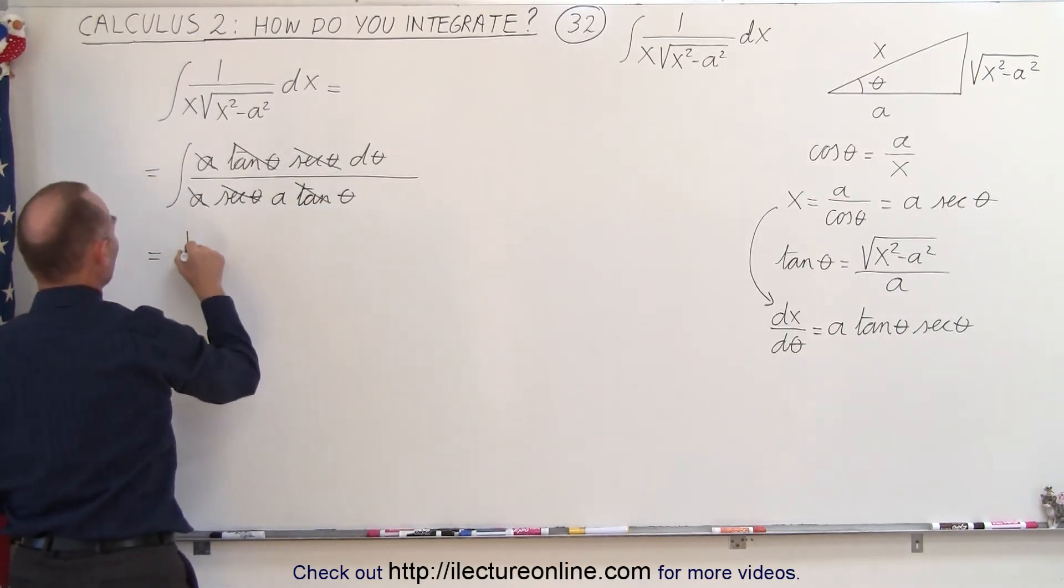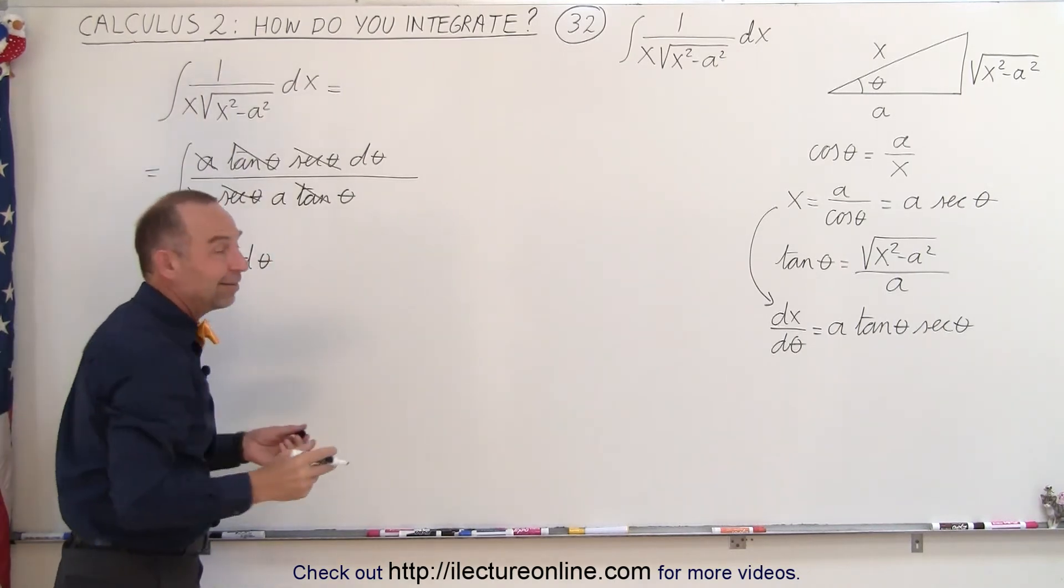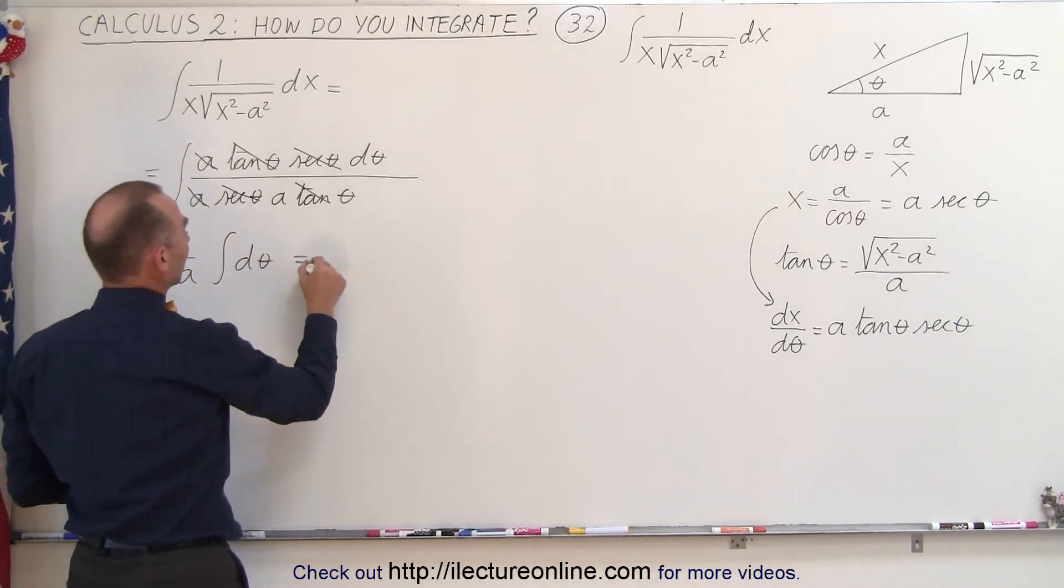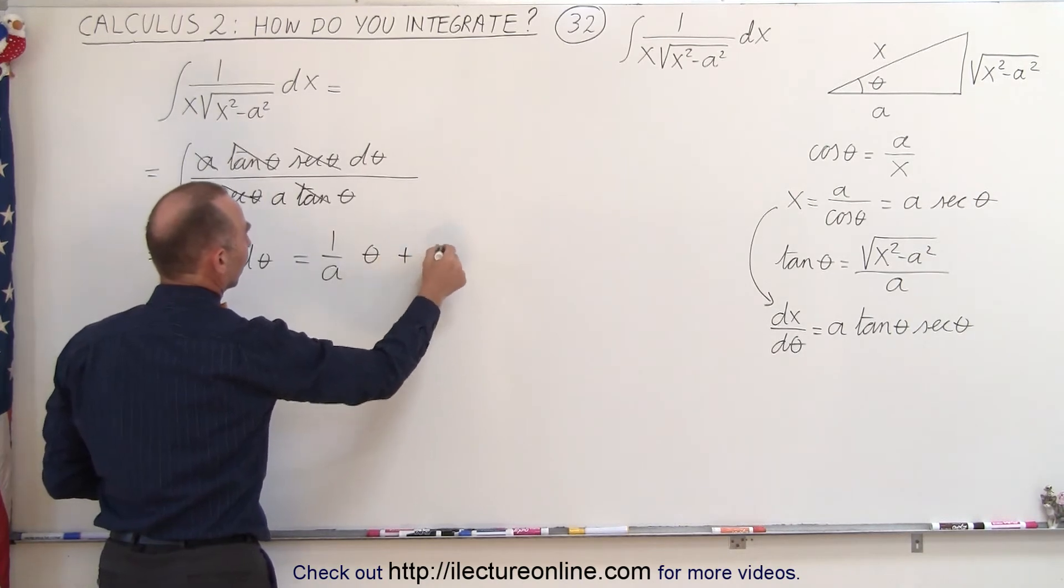So this becomes equal to 1 over a times the integral of d theta. Notice how easy the integral has become. The integral of that, of course, is theta. So this becomes 1 over a times theta plus a constant of integration.